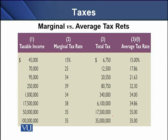The total tax comes to $12,500. If we want to determine the average tax rate, we divide $12,500 over the taxable income of $70,000, giving an average tax rate of 17.86%. There is a clear relationship between marginal tax rate and average tax rate.